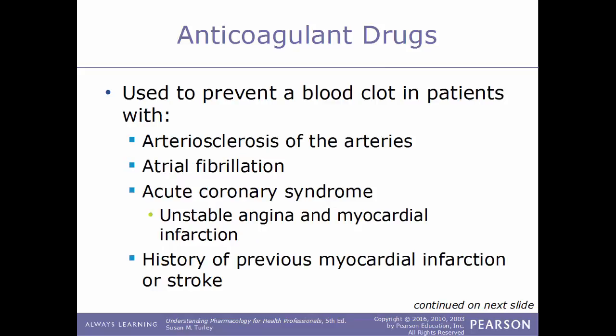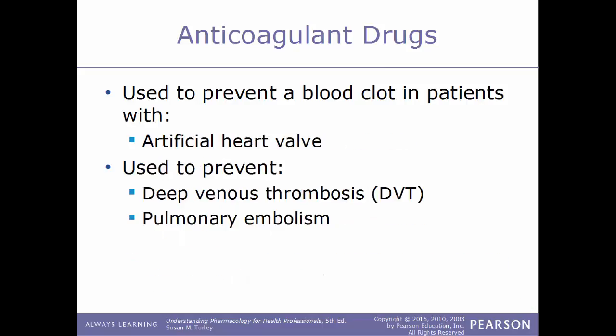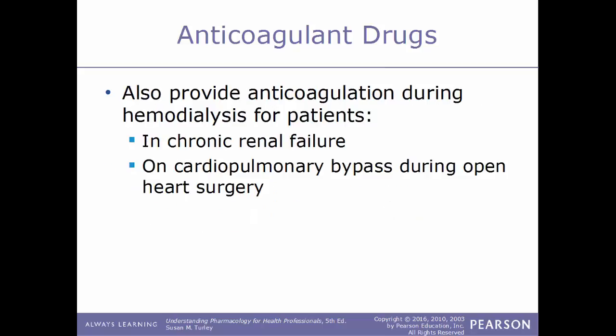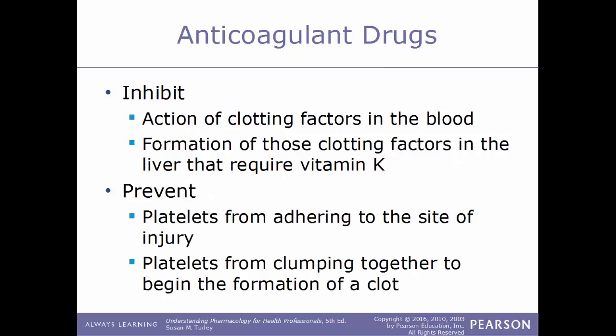Anticoagulant drugs are used to prevent blood clots in patients with arteriosclerosis, atrial fibrillation, acute coronary syndrome such as unstable angina or myocardial infarction, or in those with a history of previous strokes or myocardial infarctions. They are also used to prevent blood clots in patients with an artificial heart valve, to treat DVT and pulmonary embolisms, and to provide anticoagulation during hemodialysis for patients in chronic renal failure or on cardiopulmonary bypass during open heart surgery.